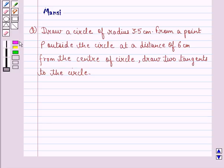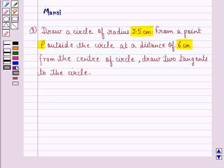Draw a circle of radius 3.5 cm from a point P outside the circle at a distance of 6 cm from the center of circle. Draw two tangents to the circle.